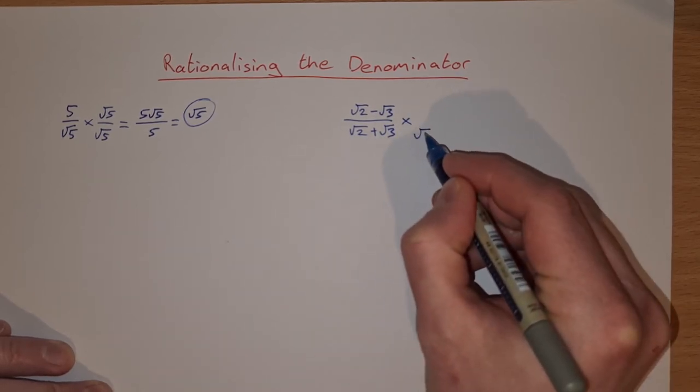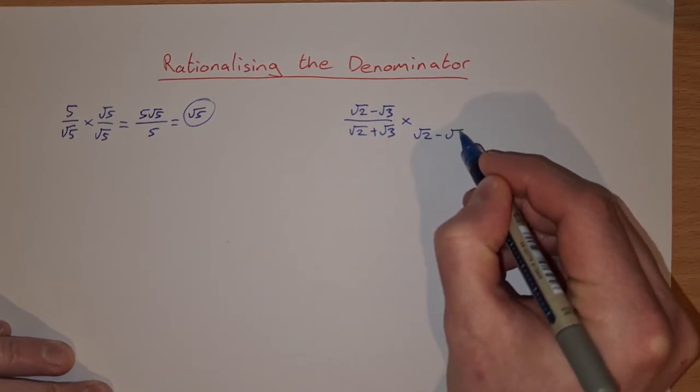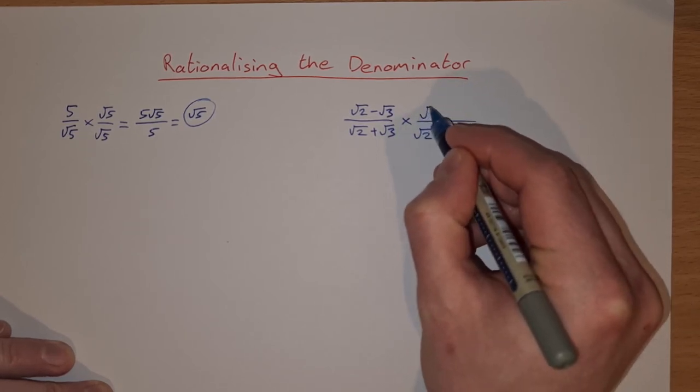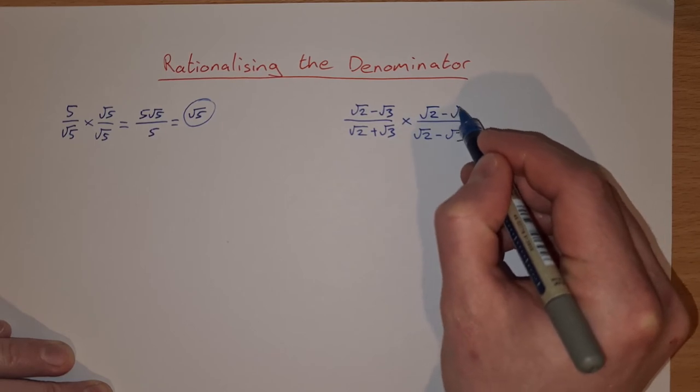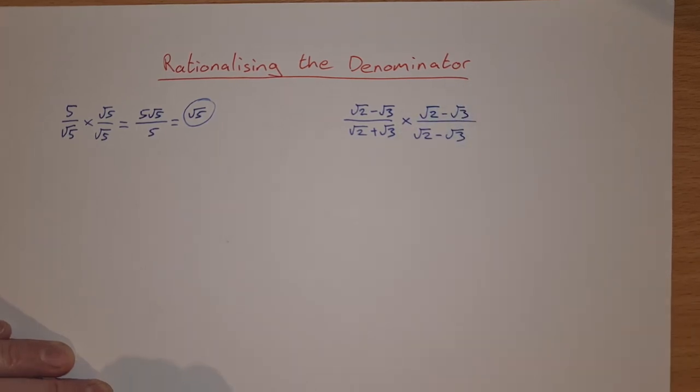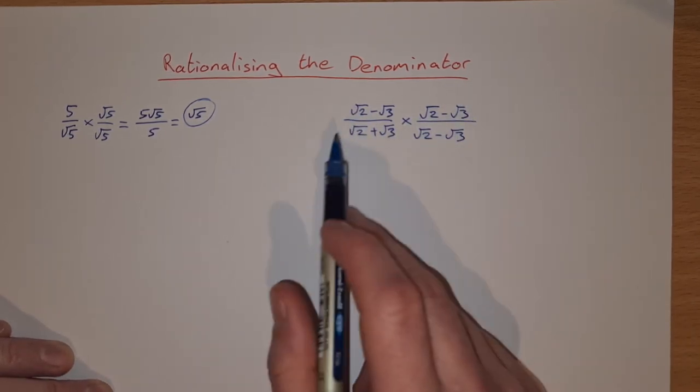So it'll be root 2 minus root 3. So that's what we're going to multiply the top and the bottom by: root 2 minus root 3. So to do this then, we do top by top and bottom by bottom.